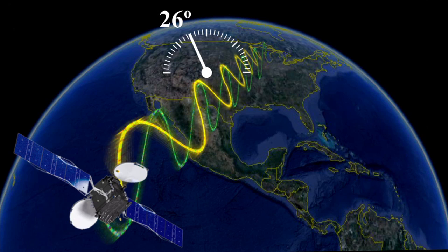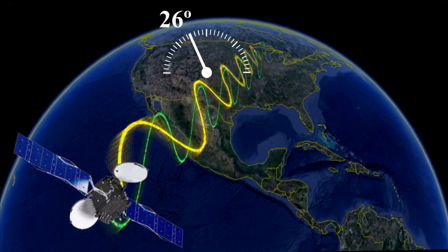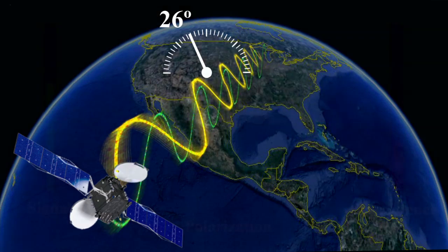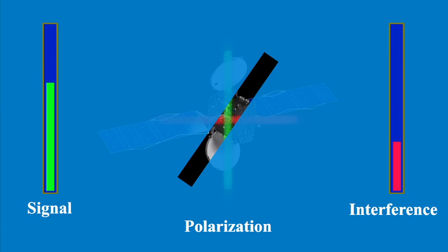This 26 degree difference could be enough to cause reception problems when the new satellite is brought online. When you try to receive a vertically polarized signal with an antenna offset by 26 degrees, there will be both some loss of desired signal strength and an increase in interference from horizontally polarized signals.